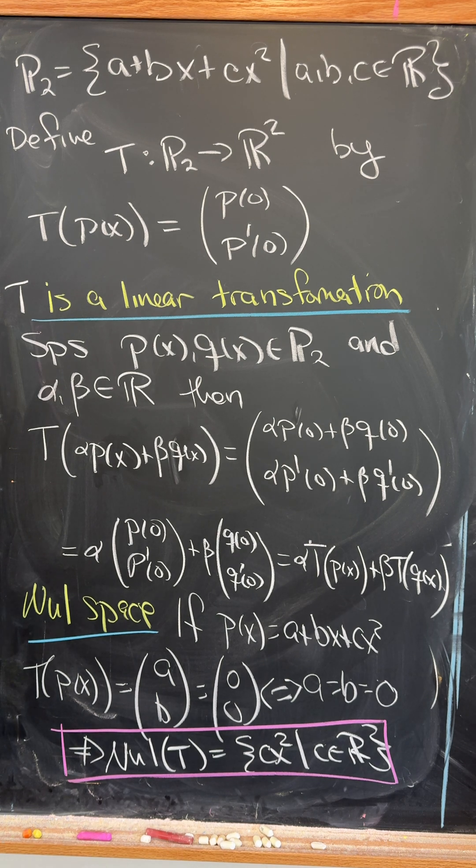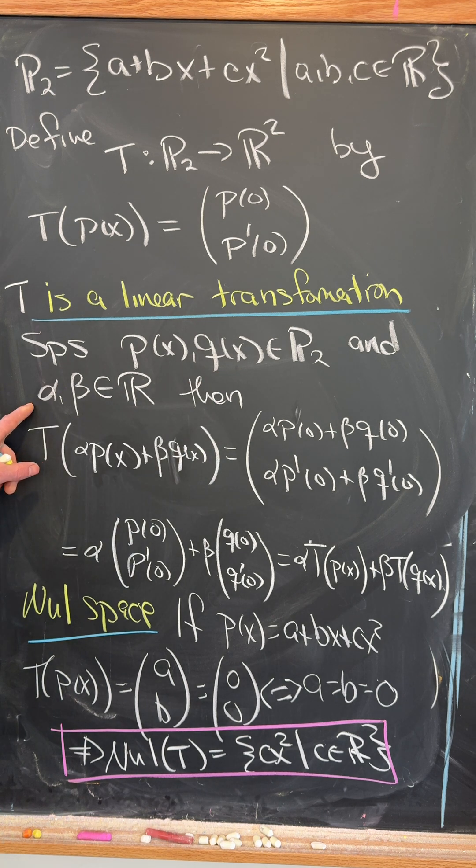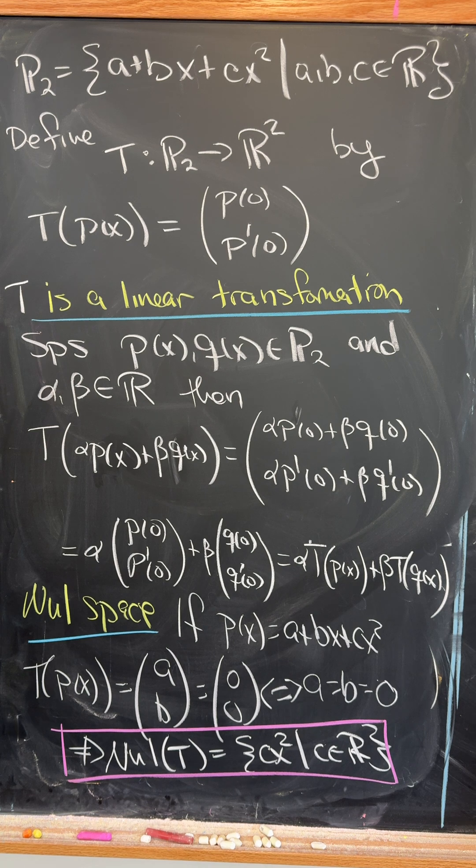Let's check that T is a linear transformation. So we need two polynomials and two numbers and then we look at T evaluated at that linear combination of the two polynomials. But this really just boils down to the linearity of the derivative and it simplifies out very nicely.